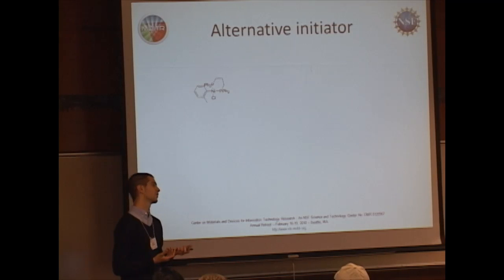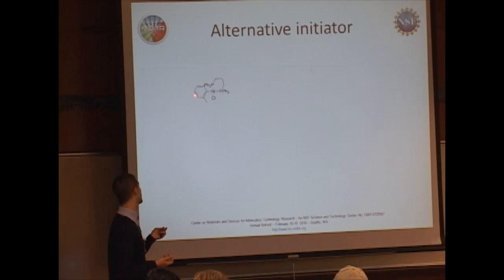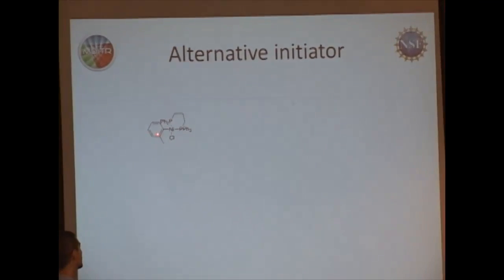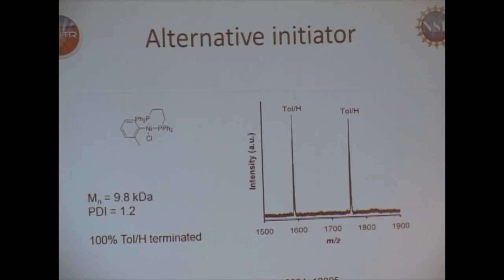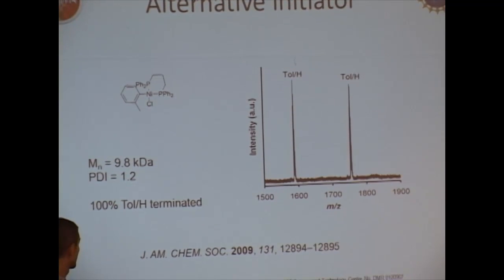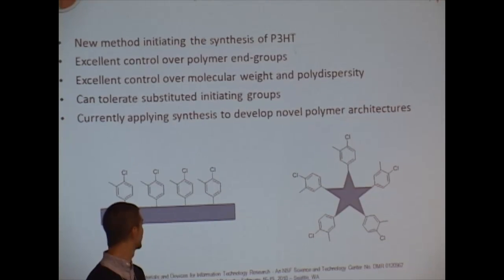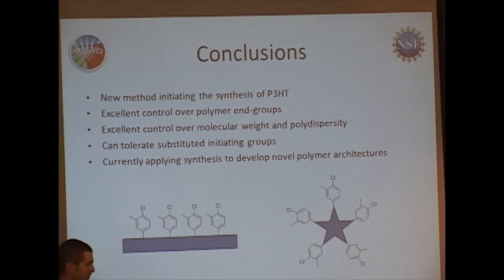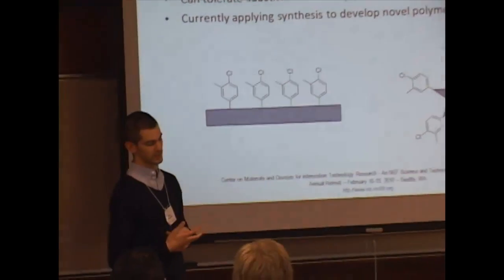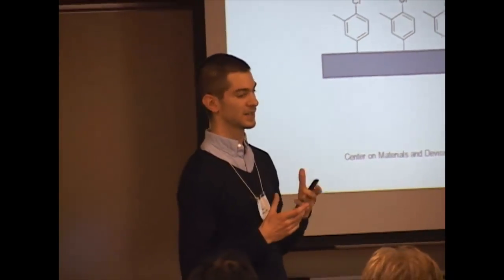However, to make the new polymer architectures we're interested in, we need some degree of functionality. The next thing we tried was making the same complex with an ortho-tolyl group — not quite a star-shaped polymer yet, but a step in that direction. It's just as easy to make as the other one, and in fact works even better: we get 100% pure initiation with no side products, a very low PDI, and a nice molecular weight that corresponds well with the feed ratio. We published these results last year.